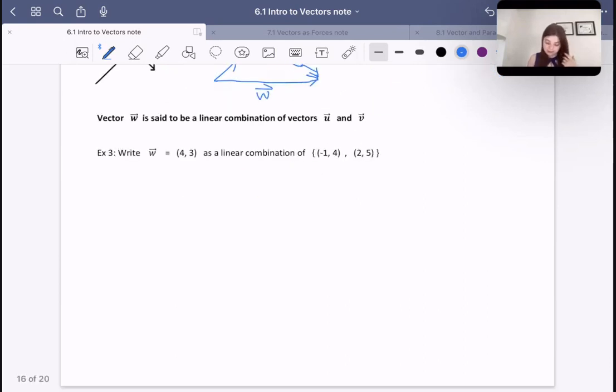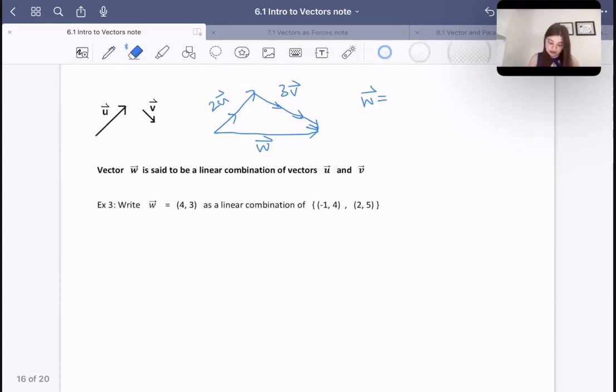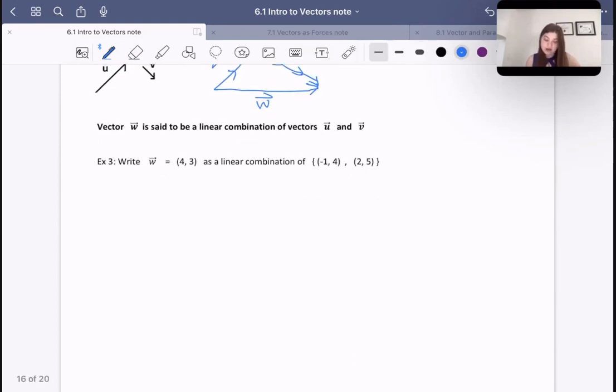All right, here's another example. Vector w, right? Vector w, 4, 3, as a linear combination of (-1, 2), (2, 5). Now this one is a little bit trickier, because when we have 1, 0, and 0, 1, it's very simple.